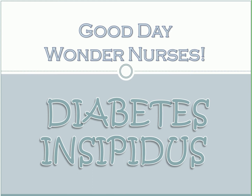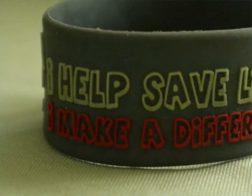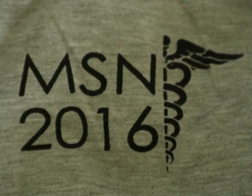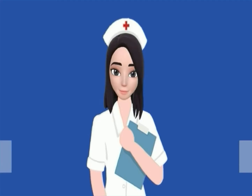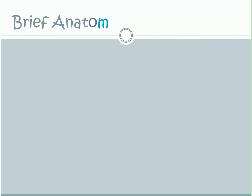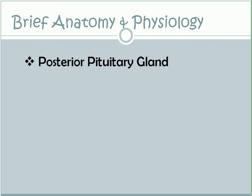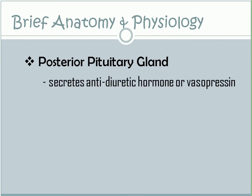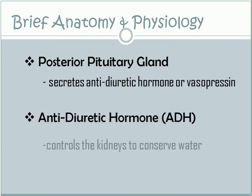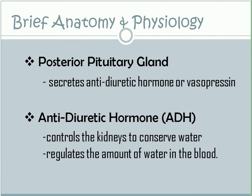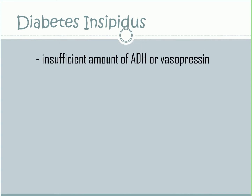Let's start! Let me first discuss the brief anatomy and physiology relevant to our topic. Normally, the posterior pituitary gland secretes antidiuretic hormone or vasopressin — a hormone made by the hypothalamus in the brain and stored in the posterior pituitary gland. ADH is responsible for controlling the kidneys to conserve water and regulates the amount of water in the blood. In diabetes insipidus, there is insufficient amount of antidiuretic hormone or vasopressin in the body.